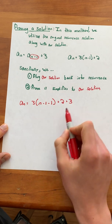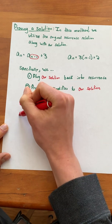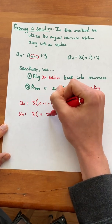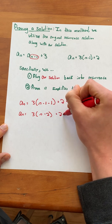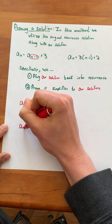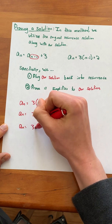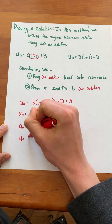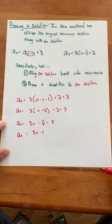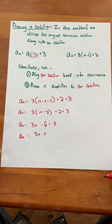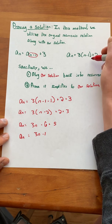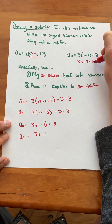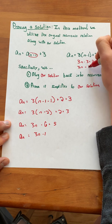From here we just want to simplify the equation. So we get a of n equals 3(n minus 2) plus 2 plus 3. This gives us that a of n equals 3n minus 6 plus 5, or that a of n equals 3n minus 1. So this might not originally look similar to our solution, but if we simplify our solution out we get 3n minus 3 plus 2, which is 3n minus 1.